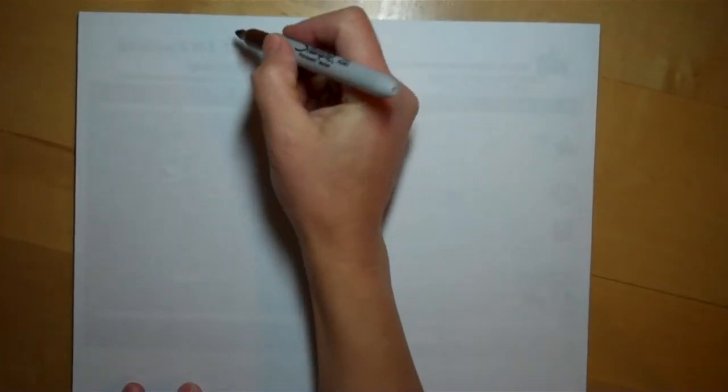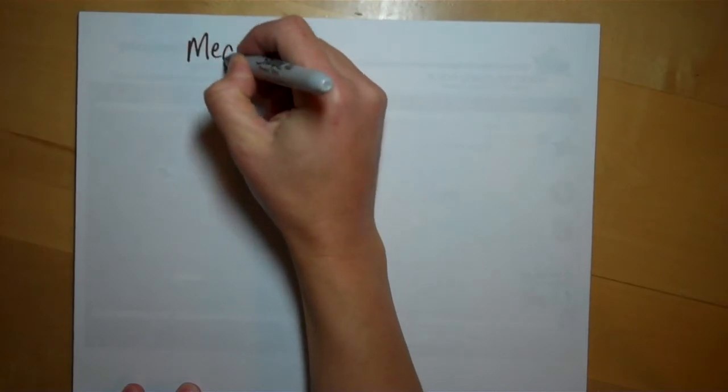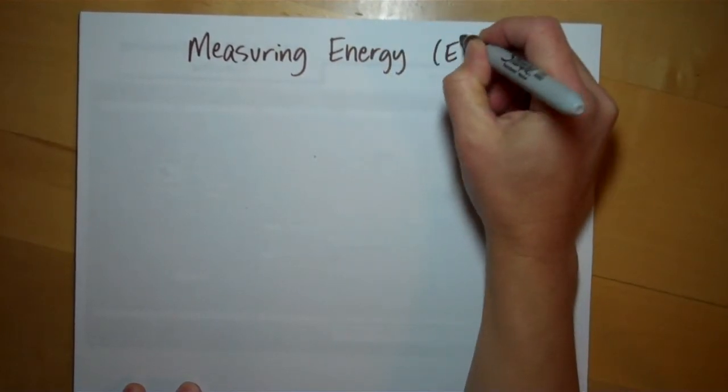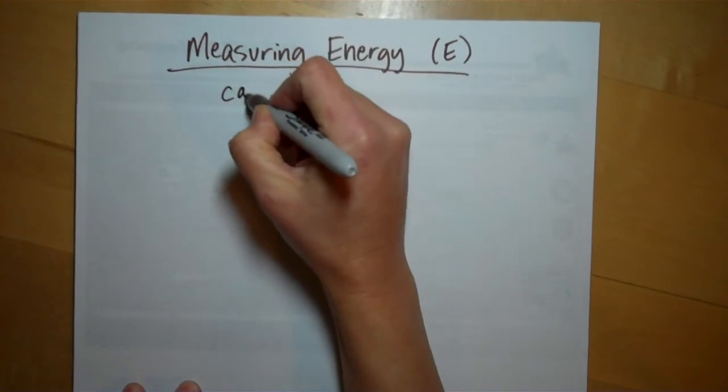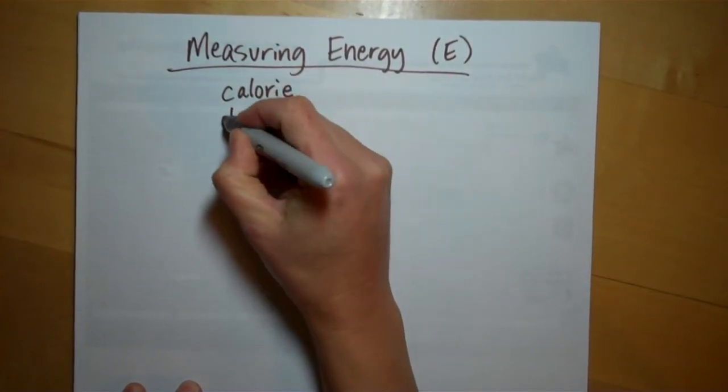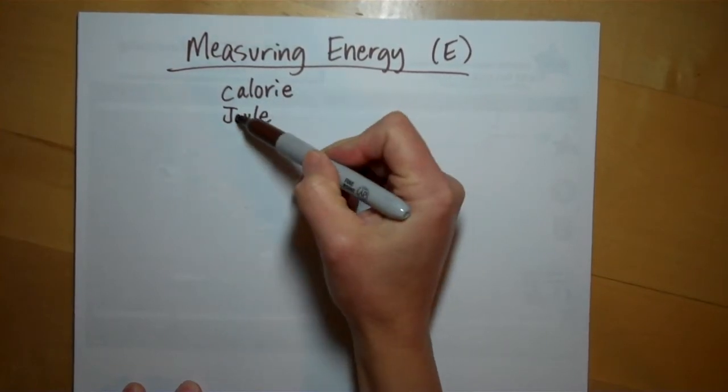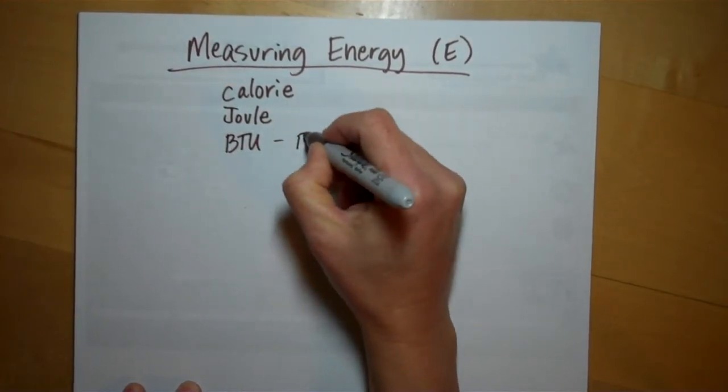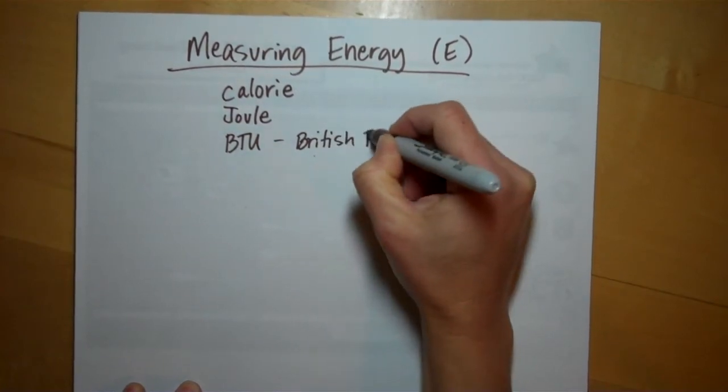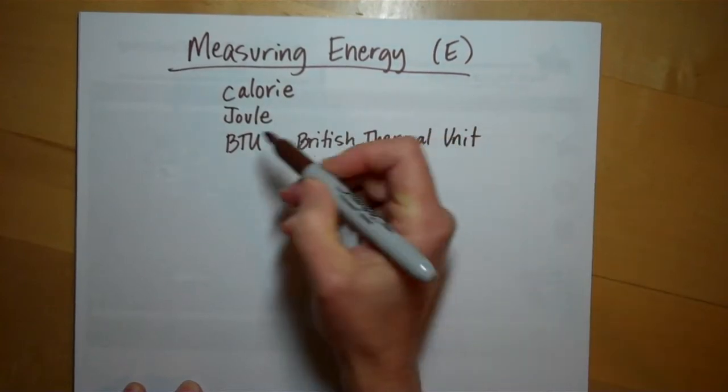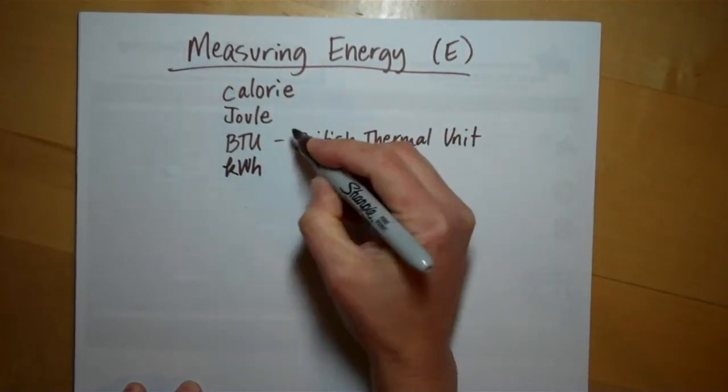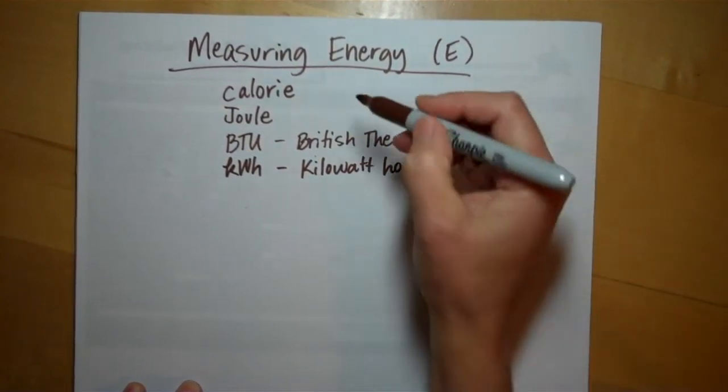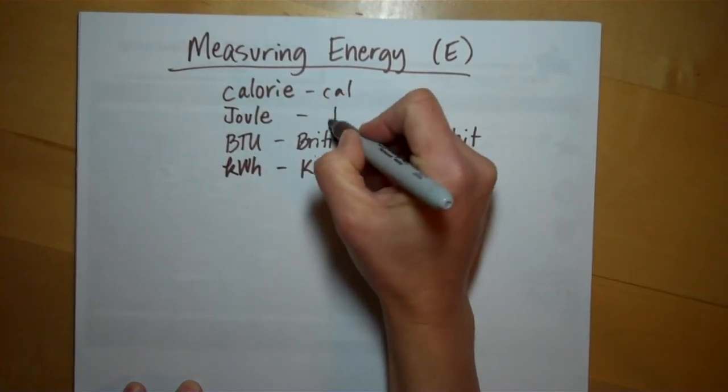Okay, we're going to talk about units for measuring energy. In this class, we're going to talk about four units in particular. Remember, energy is E. We'll talk about the calorie, notice that's a lowercase c. The joule, named after Sir James Joule, so it's a capital J. We'll talk about the BTU, which is the British Thermal Unit, and we will also talk about the kilowatt hour.